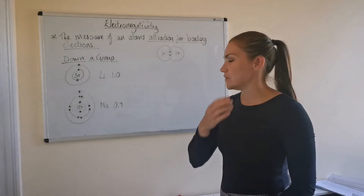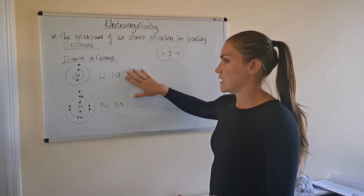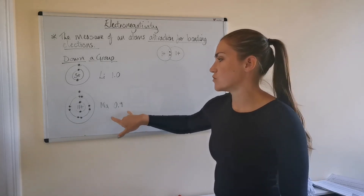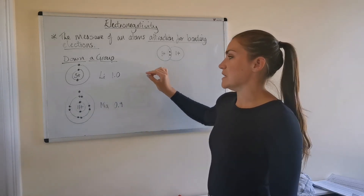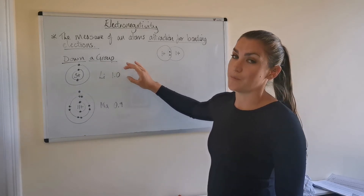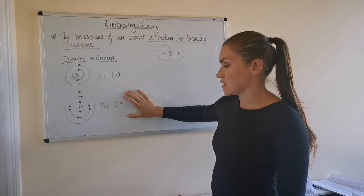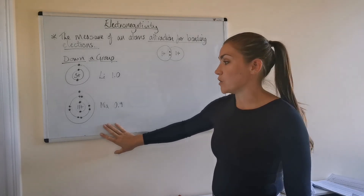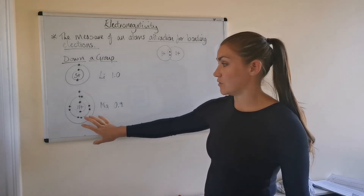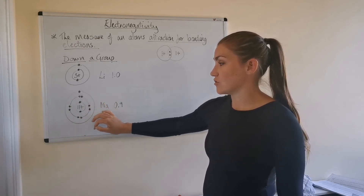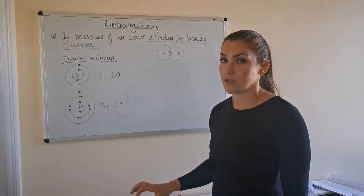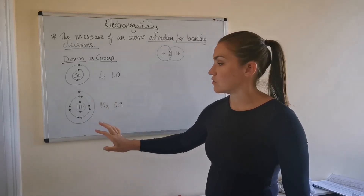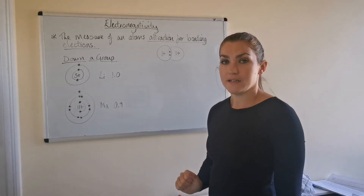Now looking at going down a group: lithium has an electronegativity value of 1, and sodium, just below it in the alkali metals group, has an electronegativity value of 0.9. So lithium is more electronegative — more attractive to bonding electrons — than sodium. Why is this? As you go down the group, you get increasing numbers of occupied energy levels, which means an increased shielding effect on the nuclear charge. Any bonding electrons are not going to be as attracted to a sodium nucleus as to a lithium nucleus, because sodium has a greater shielding effect due to its greater number of occupied energy levels.